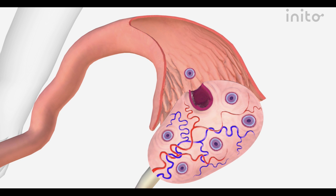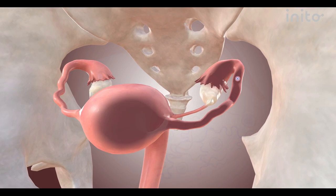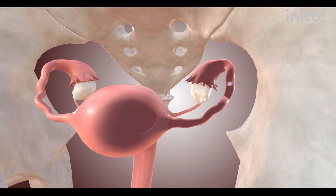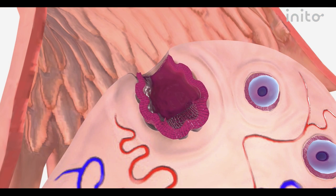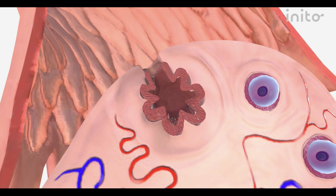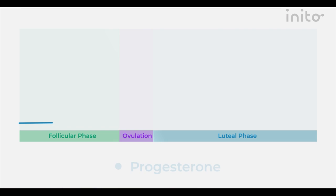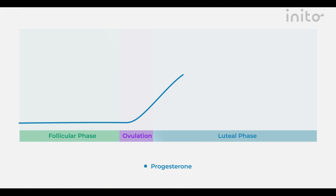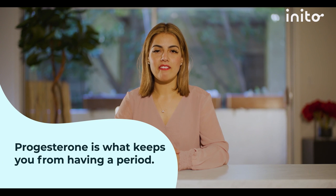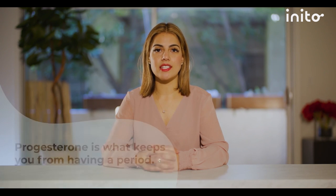The second part of your cycle happens after LH causes one of your follicles to release an egg. The egg travels down the fallopian tube and into the cervical canal, while the follicle that the egg just came from forms the corpus luteum that produces progesterone. Progesterone is the dominant hormone now that you're in the second half of your cycle, which we call the post-ovulatory phase.